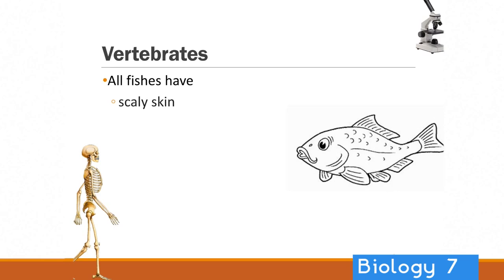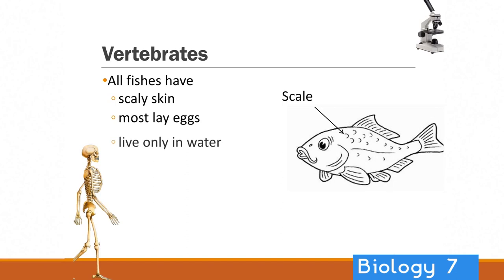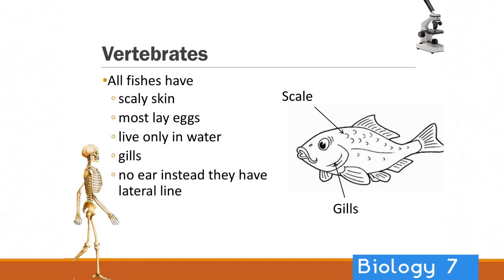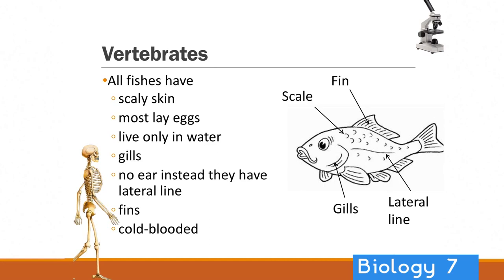How about fish? All fish have got scales, scaly skin. Most of them lay eggs, but some give live birth. They live only in water and they've got gills — that's probably the big characteristic that defines them; they're able to get oxygen out of the water. They have something called a lateral line, which helps to sense their environment and sense where other fish are around them. They have fins to help them navigate through the water and swim, and these are cold-blooded vertebrates as well.